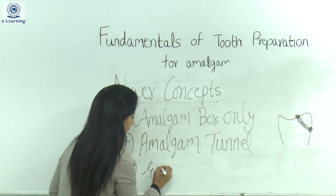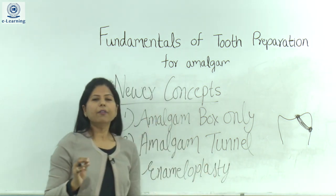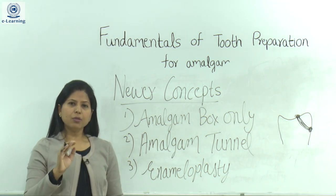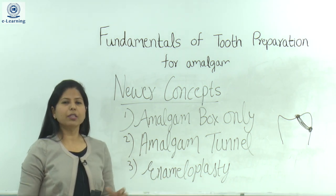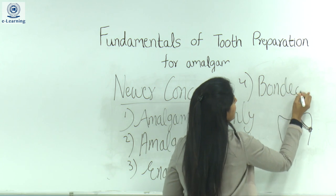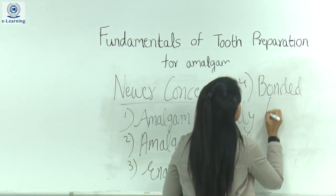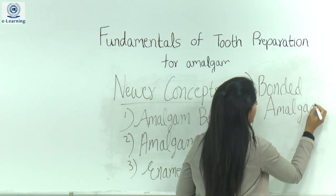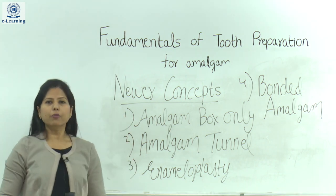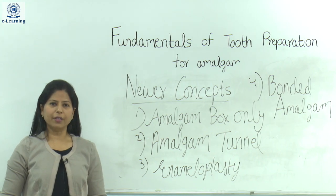Next is enameloplasty — if the defect is shallow, we need not prepare a conventional cavity; we simply remove the defect and no restoration is needed, preserving the tooth structure. And finally, bonded amalgam restorations also come under the newer concepts of tooth preparation. We have now covered the topic: fundamentals of tooth preparation for amalgam. Thank you.